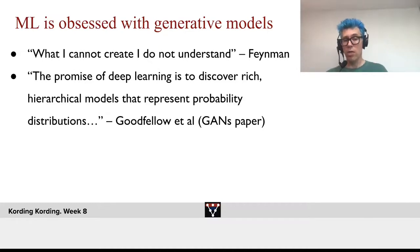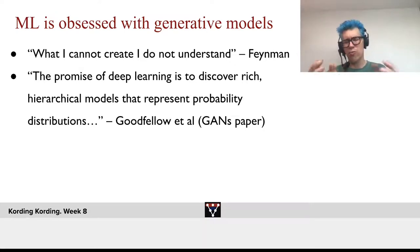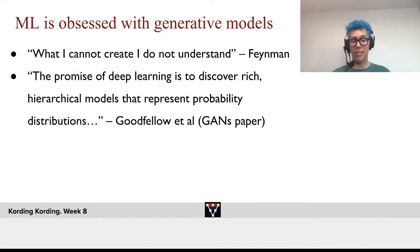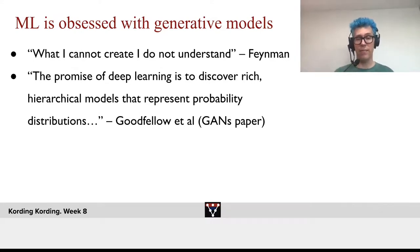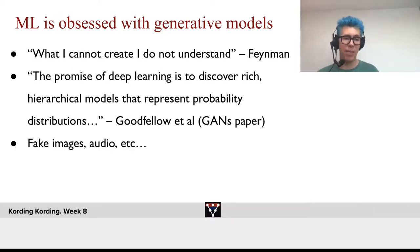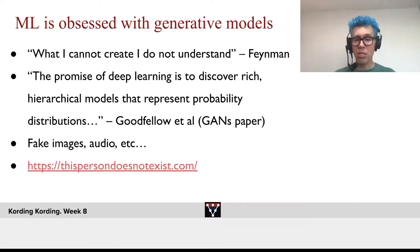Goodfellow doesn't talk about just compressing something. He really wants a generator. At some level, you can say there's reality out there, and if we understand reality, we should be able to generate it. And that's from Goodfellow's classical GAN paper. We want to produce fake images, audio, and so forth.